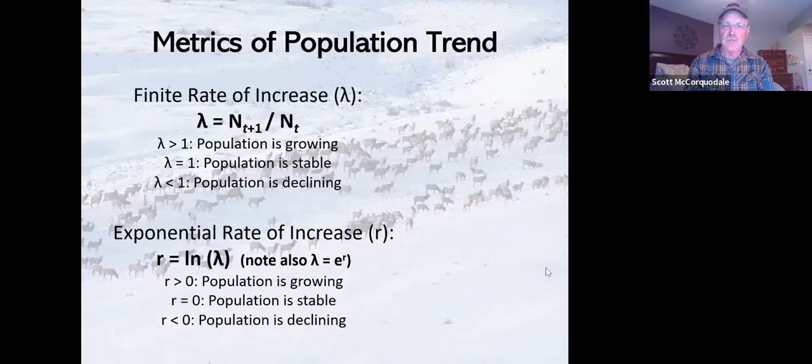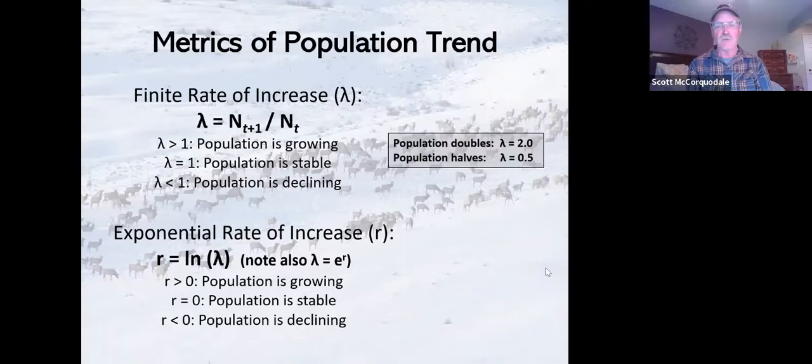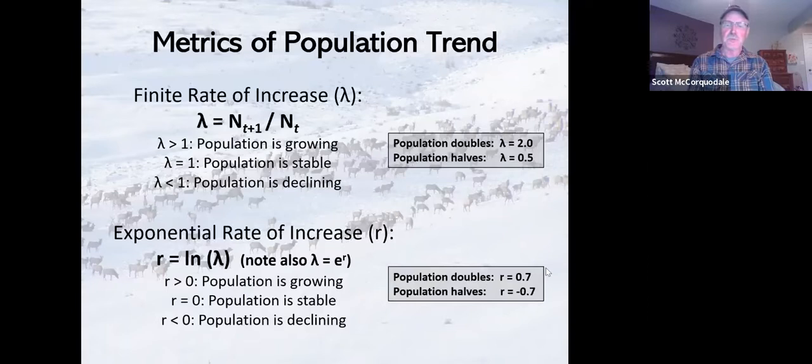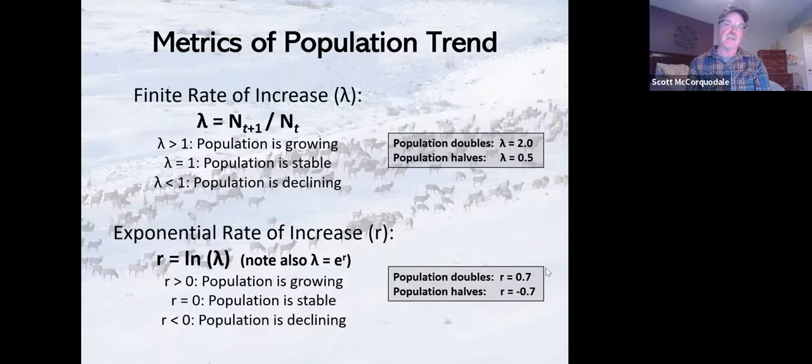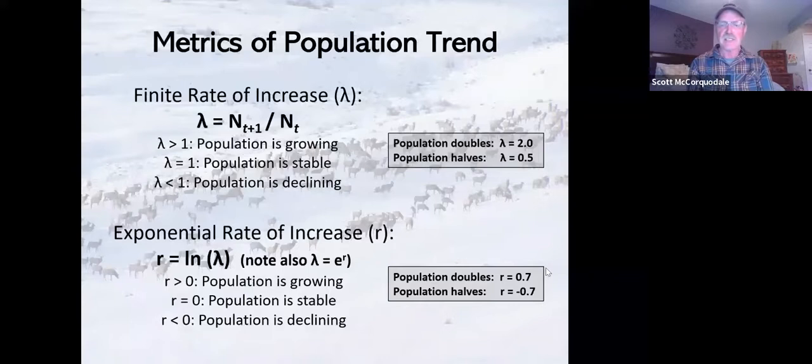Just to show you an example: if we had a population that doubled over a time step, the lambda for that would be two—twice as many animals at t+1 as we had at t. If it halved, it would be 0.5. The magnitude of this is like two or the inverse of two. Interestingly, using r as the metric, if the population doubles, it's 0.7; if it halves, it's minus 0.7. For that reason, a lot of times population ecologists find r to be a more useful and more easily interpretable metric for trend because if you have similar magnitudes of change, they're going to be the same just differing by sign, whereas with lambda, you kind of have to think about it a bit more because it's not quite as intuitive by just looking at the lambda value.